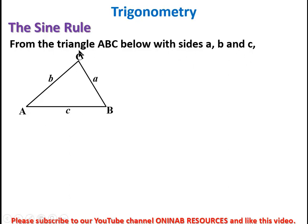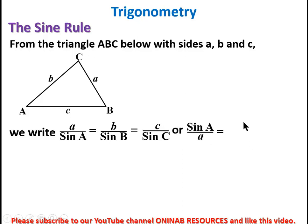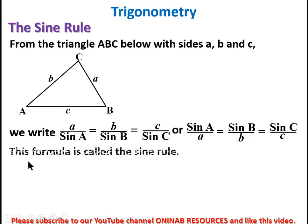We represent angles with capital letters and the sides with lowercase letters. From this triangle we write the Sine Rule as: a over sin A equals b over sin B equals c over sin C. Alternatively, the other form is: sin A over a equals sin B over b equals sin C over c. This formula is called the Sine Rule.